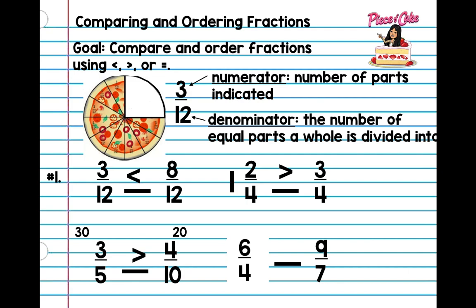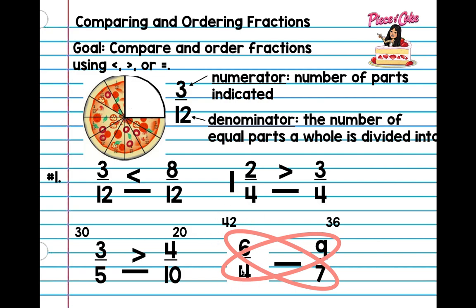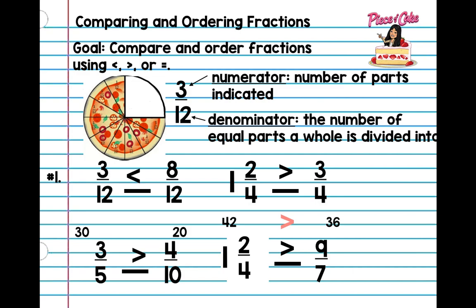Now we can cross-multiply. Go ahead and do six times seven first — it doesn't matter which side you start with. Four times nine is thirty-six, and six times seven is forty-two. So this fraction is going to be the bigger one.